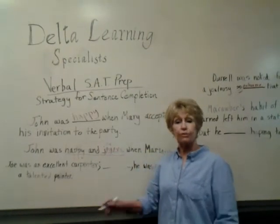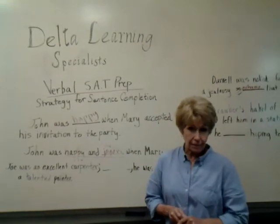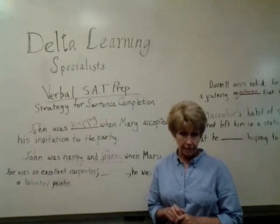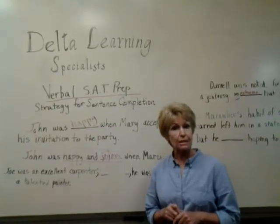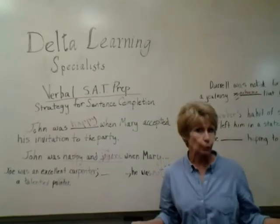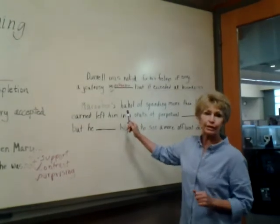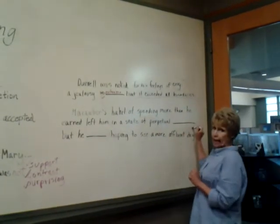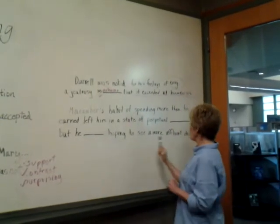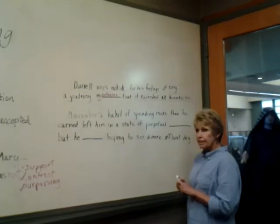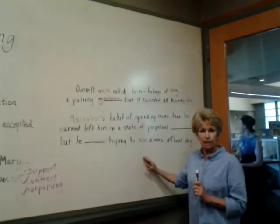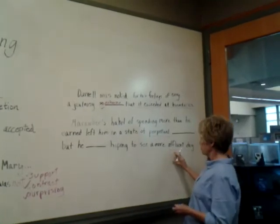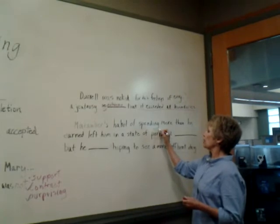Those are some of the clues you will find in the SAT sentences. I hope this helps you. Now, there is one other kind of sentence on this section — the two-blank sentence. Students fear these, but there's really no reason to, because in my mind it gives you double the possibilities of being correct. Here is an example straight from the book: 'McCauver's habit of spending more than he earned left him in a state of perpetual blank, but he blank, hoping to see a more affluent day.' This is a good example of why you should expand your vocabulary. You should know the words perpetual and affluent — perpetual means ongoing or ever-present; affluent means wealthy.